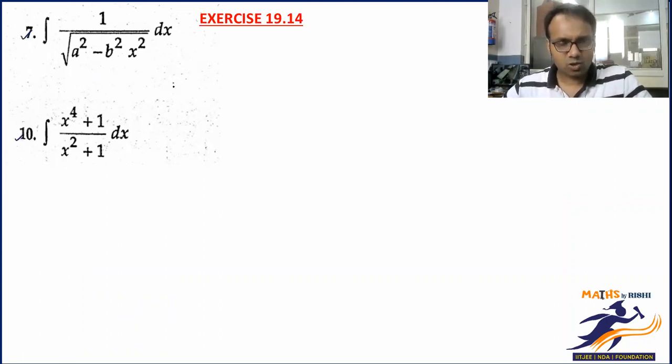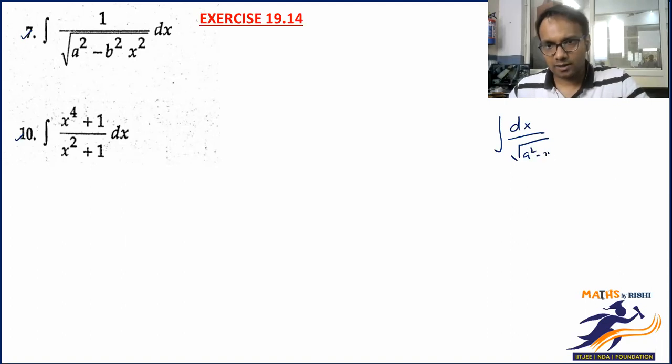Now, if I see a² - b²x², the special integrals, we have 6. Right? As I see this question, I understand the first thing that this looks like a² - x².